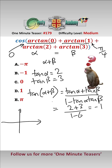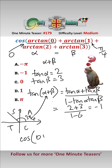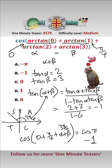Well, if tan(alpha plus beta) is minus 1, that means using our quadrant rule (all, sin, tan, cos), the angle is 3 pi over 4. So alpha plus beta is 3 pi over 4, which means we're looking at cos of 0, add pi over 4, add alpha plus beta, which is 3 pi over 4. That equals cos of pi, and cos of pi is minus 1 — which is answer B.